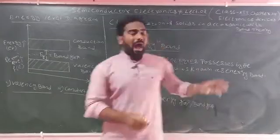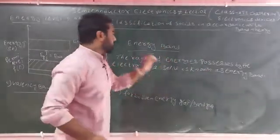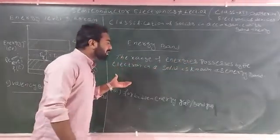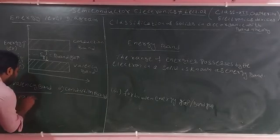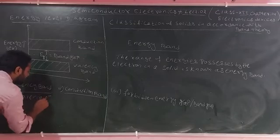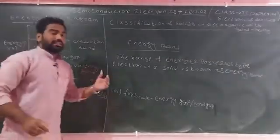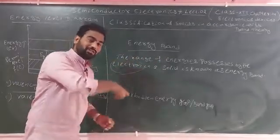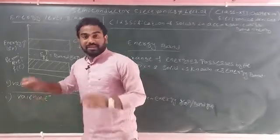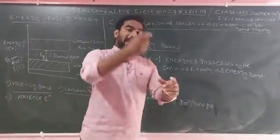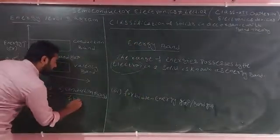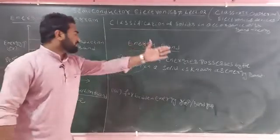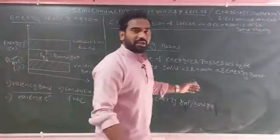Now the definitions: the range of energy possessed by the valence electrons in a solid is called the valence band. Valence electrons are bound inside the solid. Free electrons and conduction electrons carry energy, and the range of energy possessed by free electrons and conduction electrons in a solid is called the conduction band.